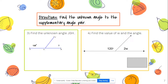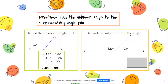Now we use the same procedure for supplementary angles, but set the equation equal to 180. For number three, we want to find angle JGH. Angle FGJ is 125 degrees, so: x + 125 = 180. Subtracting 125 from both sides gives x = 55, so angle JGH is 55 degrees.